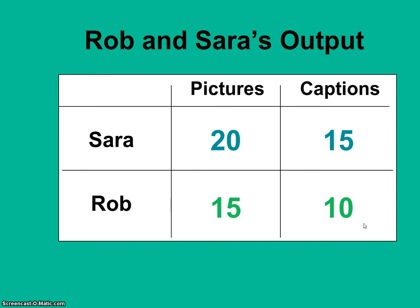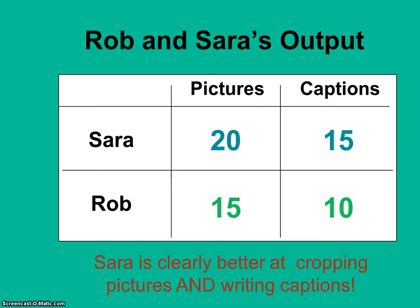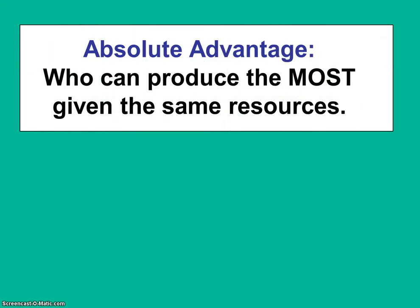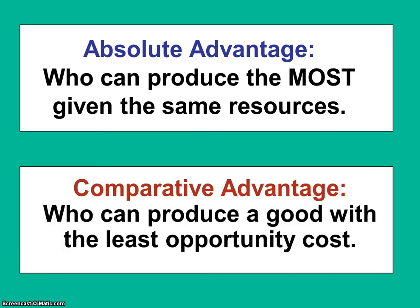For a long time people looked at this and thought that since Sarah is better at everything than Rob, Sarah has no reason to work with Rob or to specialize and trade with Rob. That is called absolute advantage — Sarah can produce the most with the same resources. With that one hour of time, Sarah can crop more pictures or write more captions than Rob could. But just because Sarah has the absolute advantage in both tasks does not mean she can't benefit from specializing and trading with Rob according to comparative advantage.